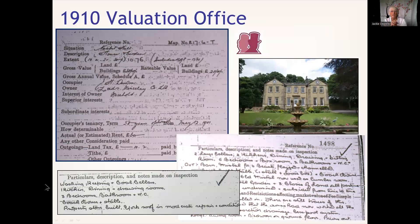The 1910 Valuation Office Survey is superb for place and house history - to some extent people, but also tenants. You don't always get records showing tenants and rentals, and this is what this survey does. There are a couple of different properties here - a smaller one and a larger one - and you see the description, the owner, and the occupier. These are gradually coming onto The Genealogist, but your local archive should be able to help you too, or the National Archives perhaps.